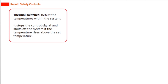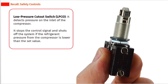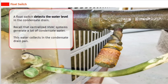Thermal switches stop the control signal and shut off the system if the temperature rises above the set temperature. The high pressure cut out switch (HPCO) detects pressure on the outlet of the compressor and shuts off the system if the refrigerant pressure is higher than the set value. The low pressure cut out switch (LPCO) detects pressure on the inlet of the compressor and shuts off the system if the refrigerant pressure is lower than the set value.